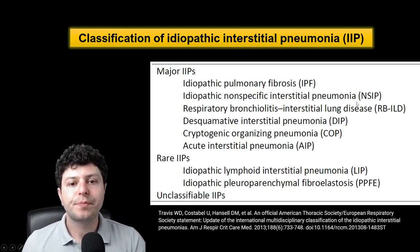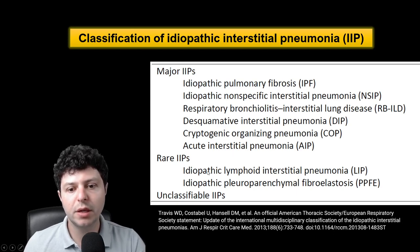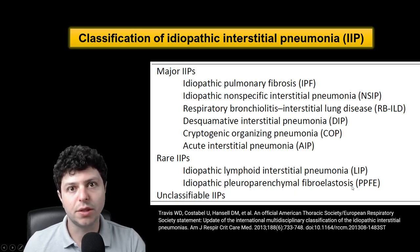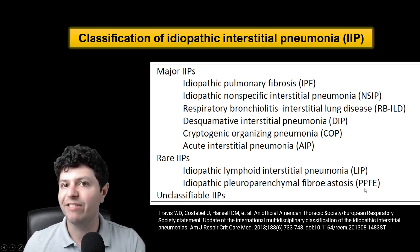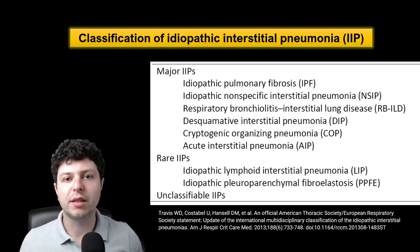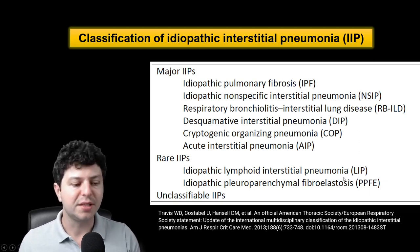Let's list the two rare idiopathic interstitial pneumonias. Alongside the major ones, there are two rare IIPs: idiopathic lymphoid interstitial pneumonia or LIP, and idiopathic pleuroparenchymal fibroelastosis or PPFE. These two rare IIPs go alongside the major IIPs and the unclassifiable IIPs.